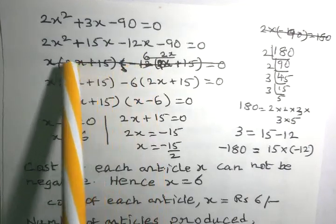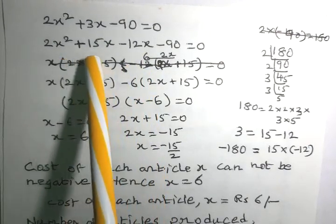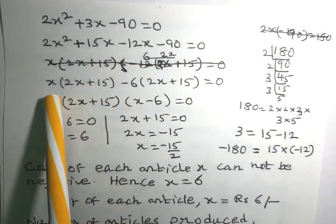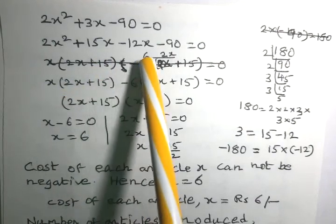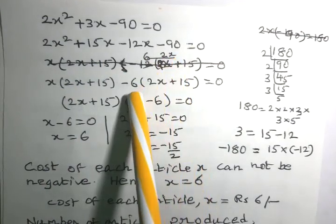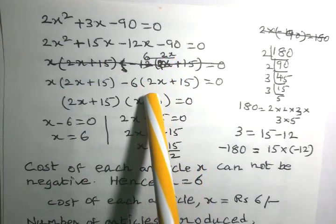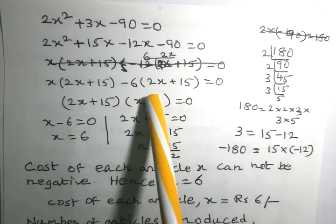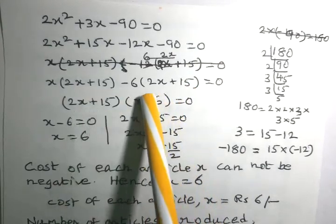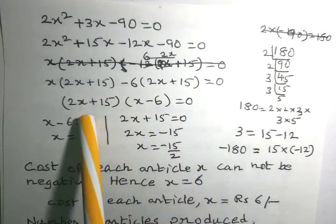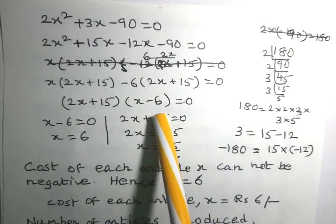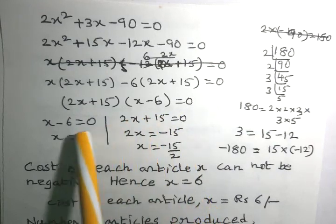Considering 2x squared plus 15x and taking x as common factor, we get x multiplied by 2x plus 15. Considering the terms minus 12x minus 90 and taking minus 6 as common factor, we get minus 6 multiplied by 2x plus 15. Now 2x plus 15 is the common factor in both terms.